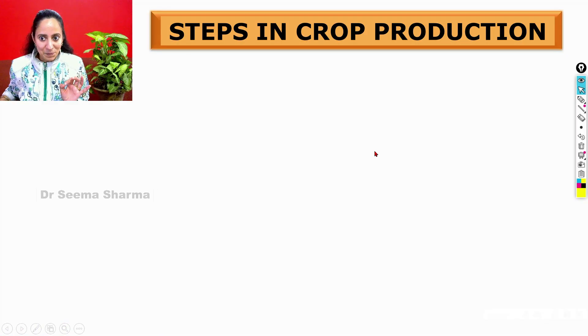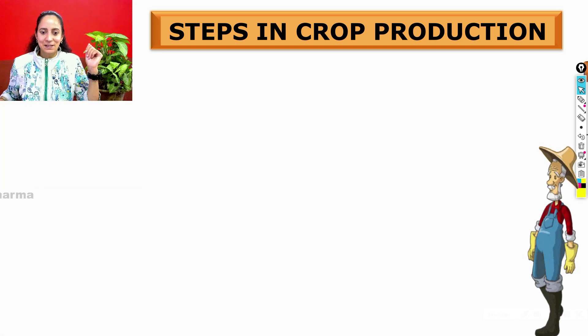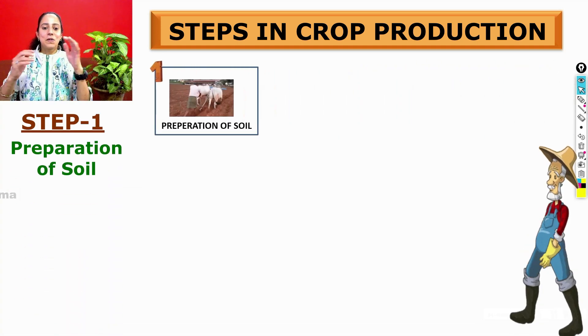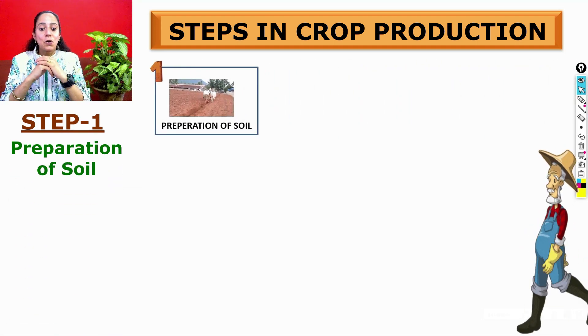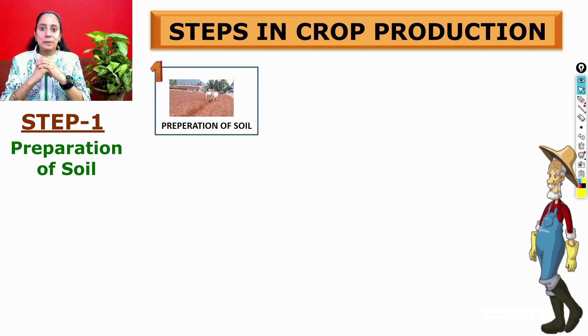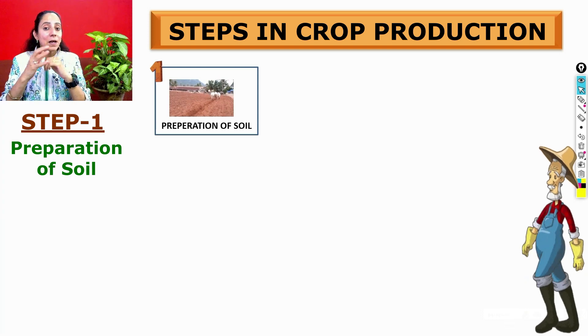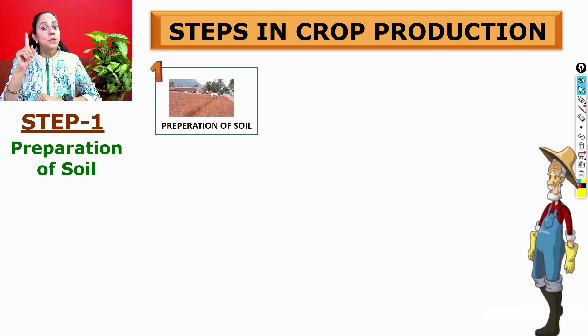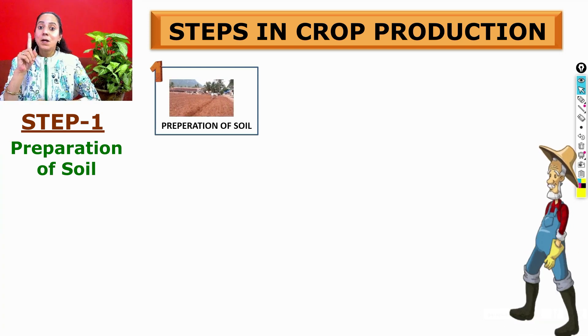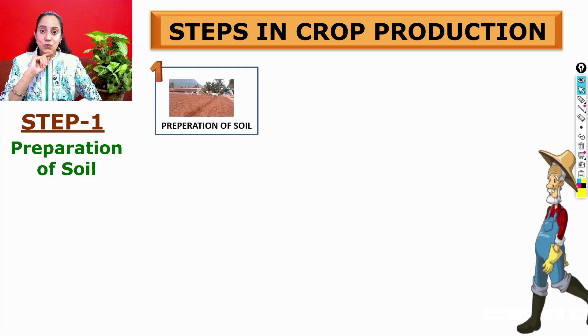Let's look at the steps of farming or crop production. The first step is preparation of soil. When the farmer has to start raising his crops, the very first step is preparation of soil.